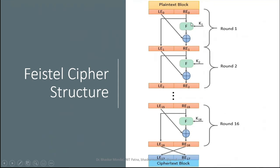The function f involves S-boxes, permutation, and substitution — these details will come when we discuss DES and other block ciphers. For now, understanding the basic Feistel structure without the internals of f is sufficient to understand other block ciphers designed on this structure.